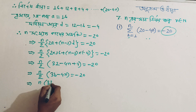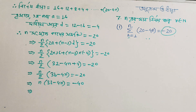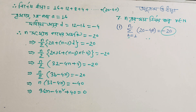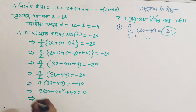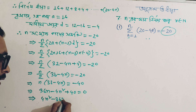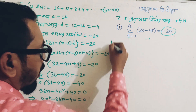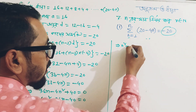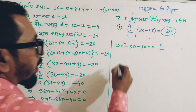Expanding: n divided by 2 gives minus 4n minus 4, equal to minus 20. Then n times (36 minus 4n) equals minus 40, so 36n minus 4n squared minus 40 equals 0, which gives minus 4n squared minus 36n minus 40 equals 0.